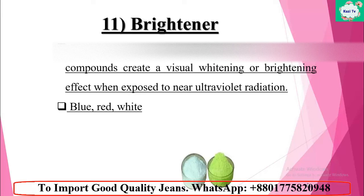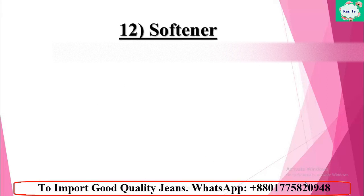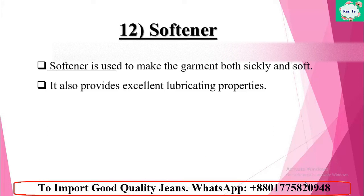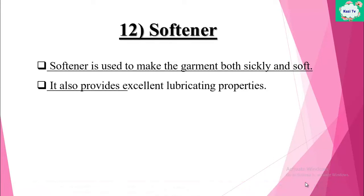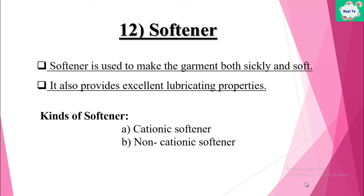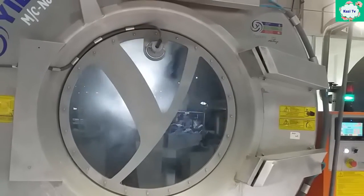Number twelve: softener. Softener is used to make garments smooth and soft, and also provides excellent lubricating properties. In the washing factory, two kinds of softener are used: cationic softener and non-cationic softener.